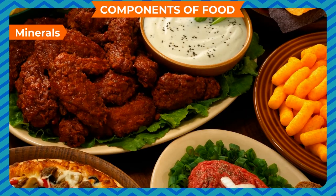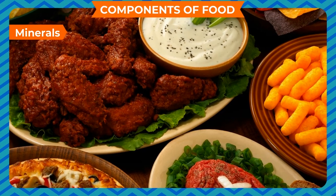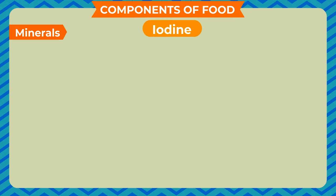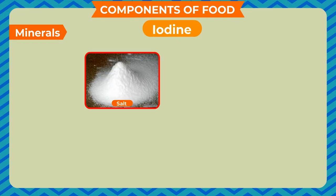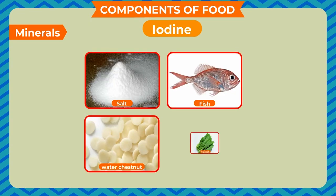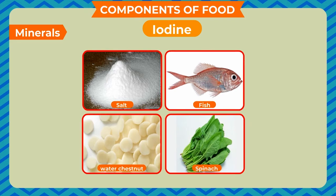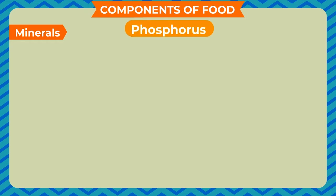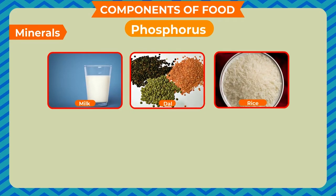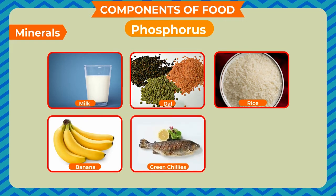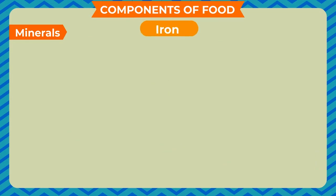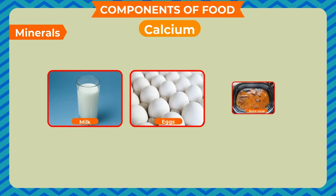Foods that provide minerals: iodine is present in salt, fish, water chestnut, and spinach. Phosphorus is present in milk, dal, rice, banana, green chilies, and fish. Iron is present in milk, spinach, apple, and papaya. Calcium is present in milk, eggs, and bone soup.